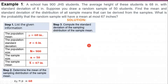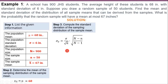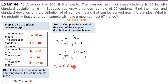For step 3, we compute the standard deviation of the sampling distribution of the sample mean. First, we classify whether the population is finite or infinite. Since the population size is given as 900, the population is finite. So we use the finite population formula, substitute the values, and we arrive at a standard deviation of approximately 0.83.